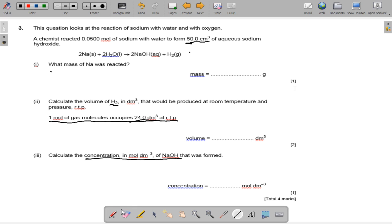We'll go through number 3 now. 0.05 times 23, mass of sodium, and that is 1.15 grams. And look at the molar ratios.